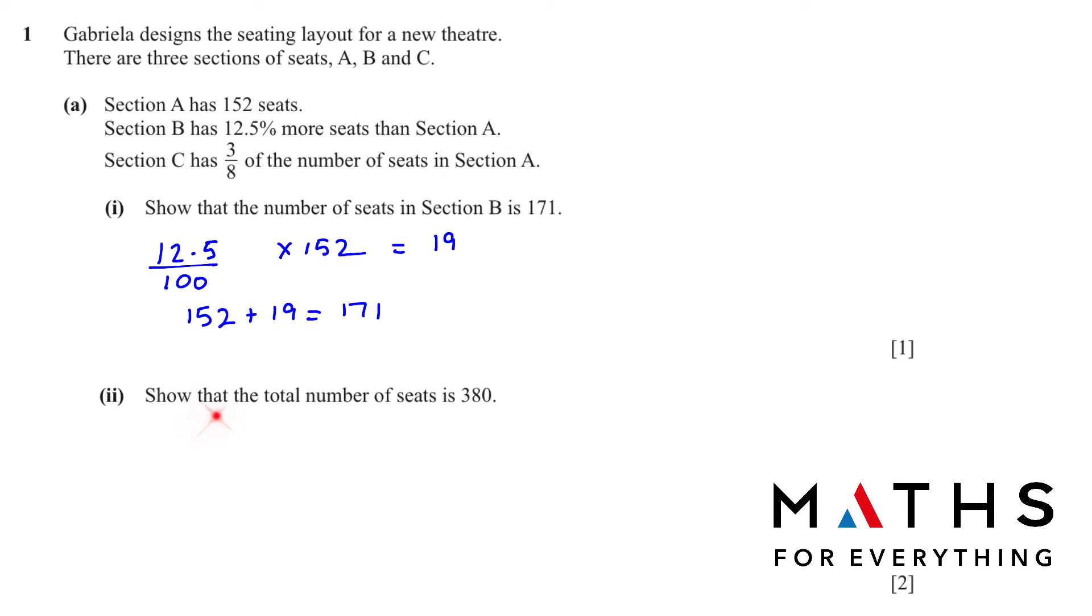In A2, show that the total number of seats is 380. We already have A and B. Now we want to find C first. C is 3/8 of the number of seats in section A. Of means multiply, 3/8 of 152. Let's see what we will get: 57. So A plus B plus C should equal 152 plus 171 plus 57, and when you add it, you will get 380. So we showed that.